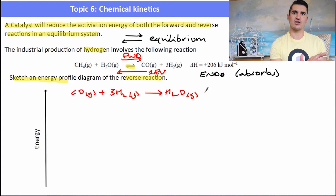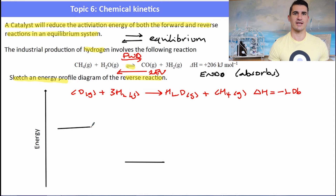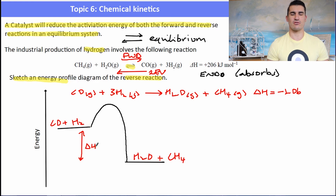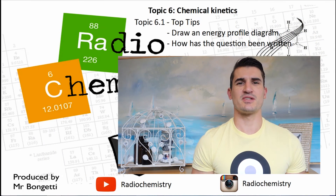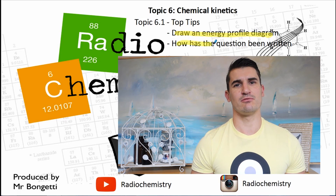Now we need to draw the energy profile diagram for that reverse reaction. We've got to remember: if we flip the reaction over, what happens to the delta H? We have to flip the sign, so this will now become an exothermic reaction. In an exothermic reaction, our reactants have greater energy than our products, so we draw the energy profile diagram accordingly. We have our reactants — CO and H₂ — and our products — H₂O and CH₄. The delta H in this case would be −206 kJ/mol. The activation energy isn't given in this question, but if asked to sketch the graph you should label it. Topic 6.1 top tips: if you're unsure, draw an energy profile diagram — it helps a lot. Just have a quick check how the question is being worded and know those different factors. Thanks for watching!